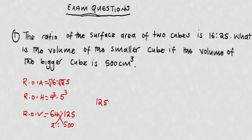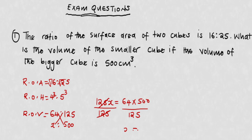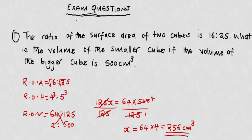Cross multiplying gives 125x = 64 × 500. Dividing both sides by 125: 125 goes into 500 four times, so x = 64 × 4 = 256 cubic centimeters. As you can see, 256 is smaller than 500, so this is the volume of the smaller cube.